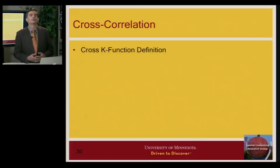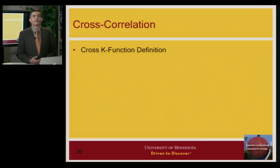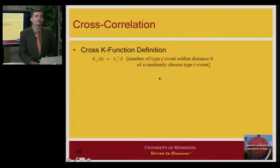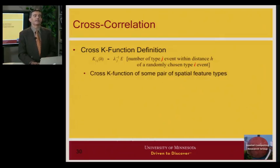You can use a similar function to study the interaction between two different sets of points. For example, consider locations of Burger King and McDonald's — if I want to ask whether these two sets of points like each other, I can use a modified function. You put a circle around McDonald's and count Burger Kings, or vice versa. If the two sets don't interact, it will track the area of the circle; if they interact, you will get higher or lower values.